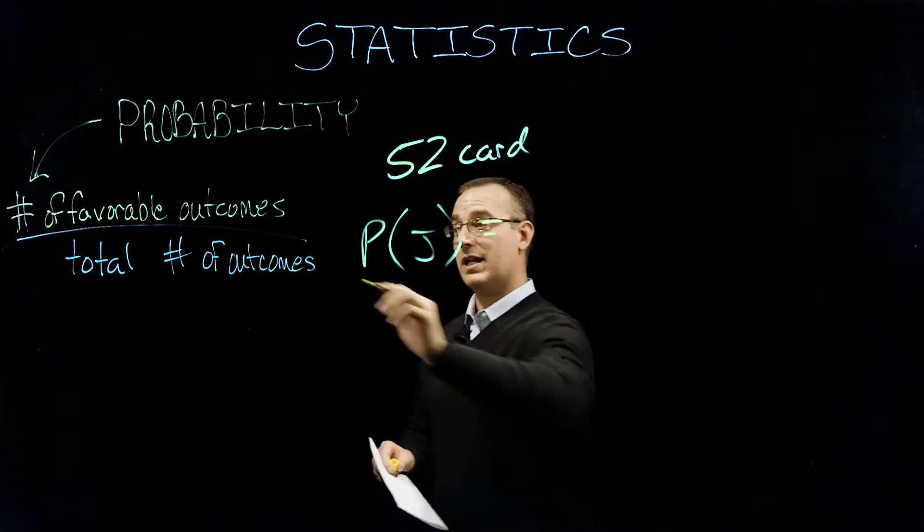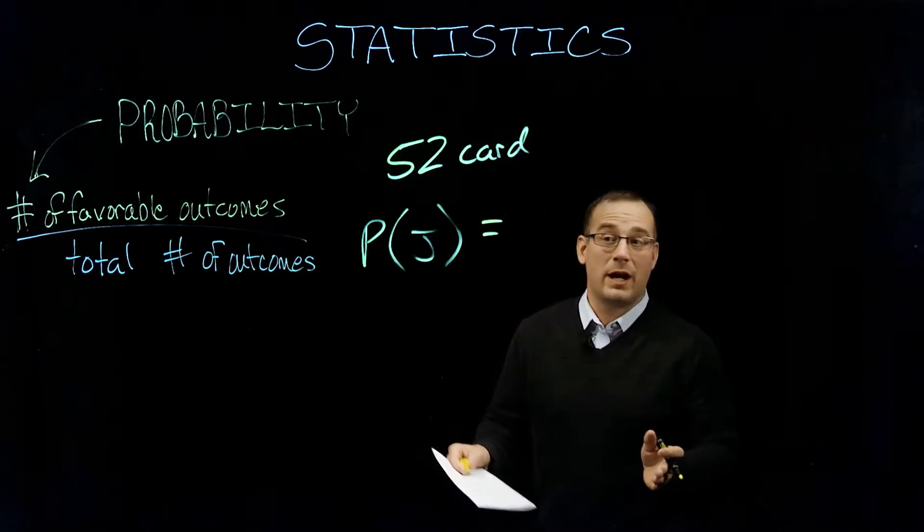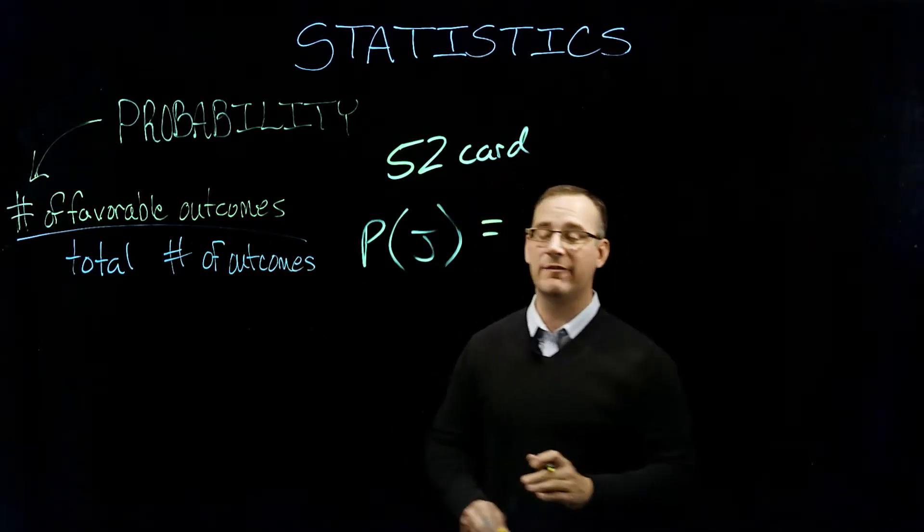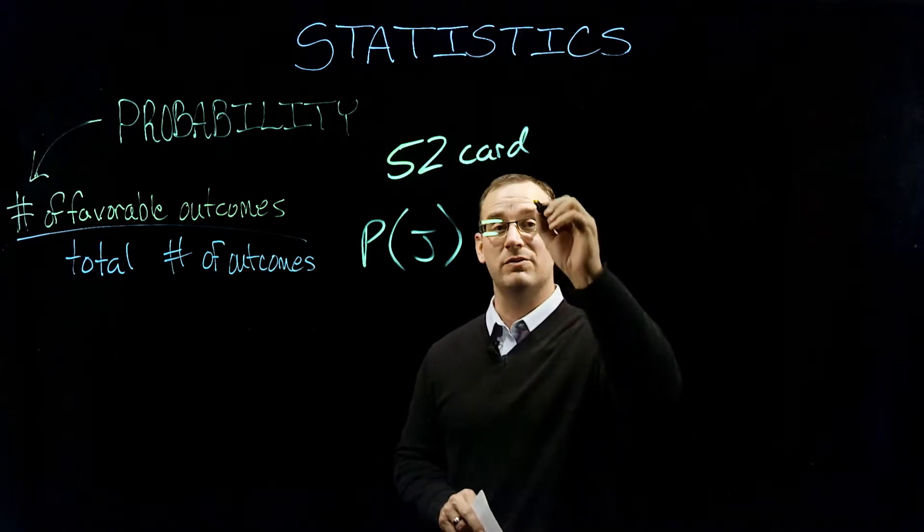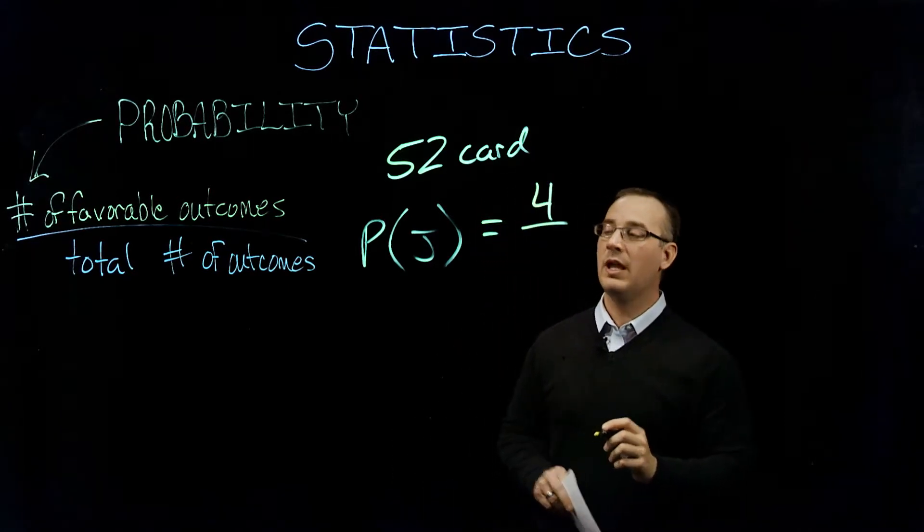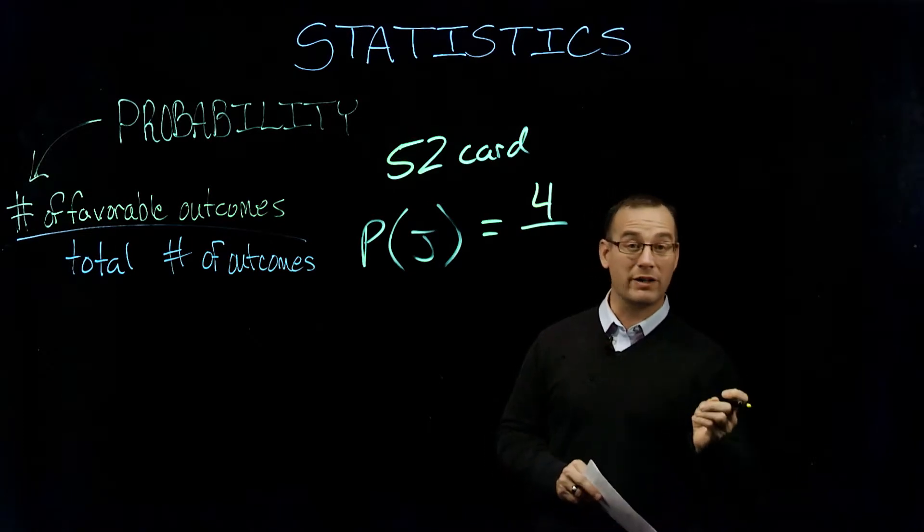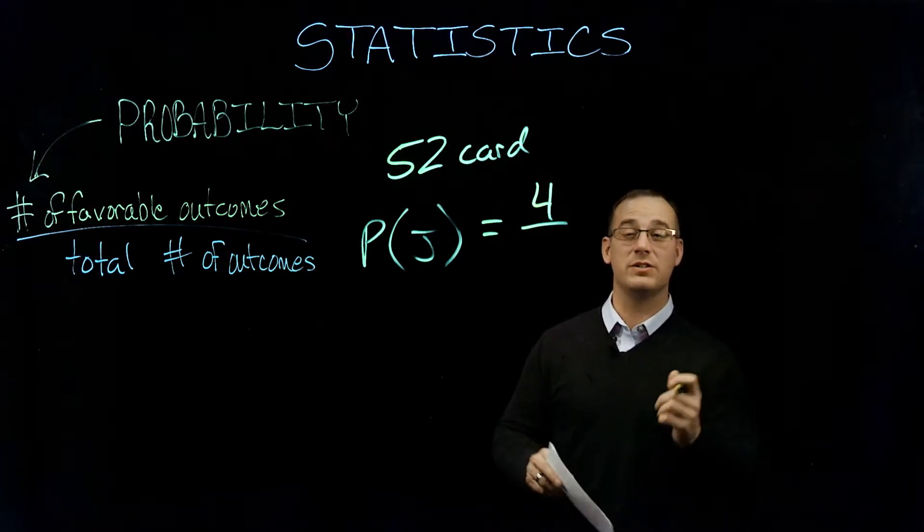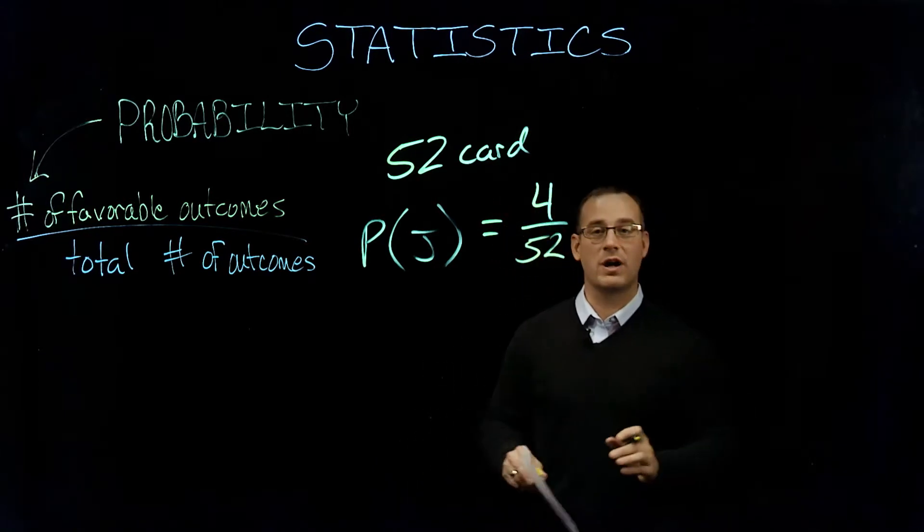And that makes sense, but if we actually look at our formula, that's exactly what we come up with. How many number of favorable outcomes? So how many jacks are there out of a standard deck of 52? Well, there are four. How many total number of outcomes? Well, the number of outcomes of drawing one card out of 52, there's 52 possibilities. So we get four out of 52.